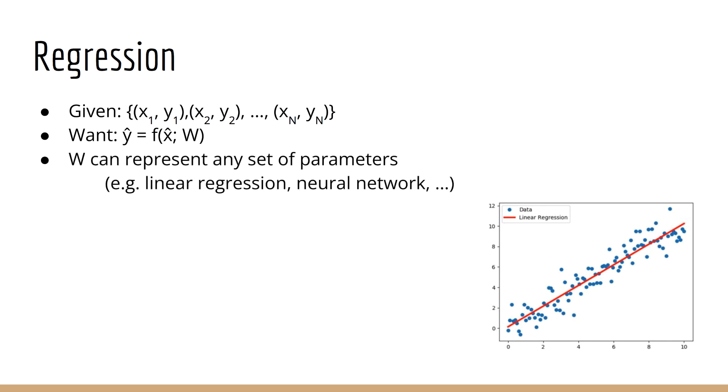Note that W can represent any set of parameters, like the weight vector for linear regression, or the multiple layers of weight matrices and bias vectors in a neural network. The point is, during this learning process, our goal is to learn the best version of W we possibly can. Best is defined by our loss function, so that the best W is the one that minimizes the loss.